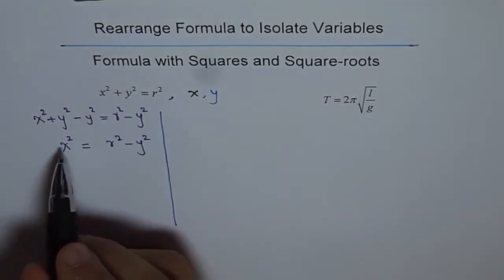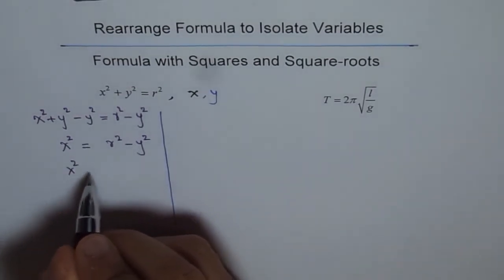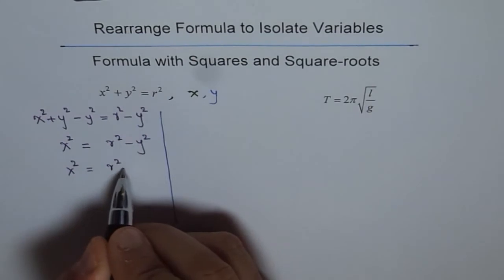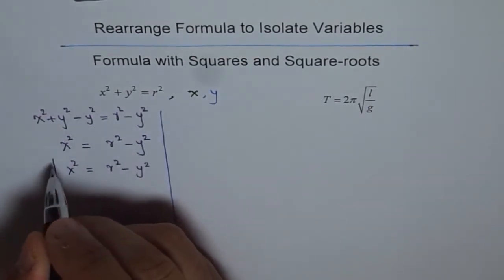Now, from a square, we will square root both sides. So, we will rewrite this x² = r² - y² and then we will square root both sides.